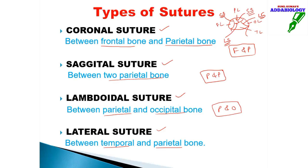To summarize: coronal suture is between the frontal and parietal bone; sagittal suture is between the two parietal bones; lambdoidal suture is between the parietal and occipital bone; lateral suture is between the temporal and parietal bone. The age for suture formation is two years.